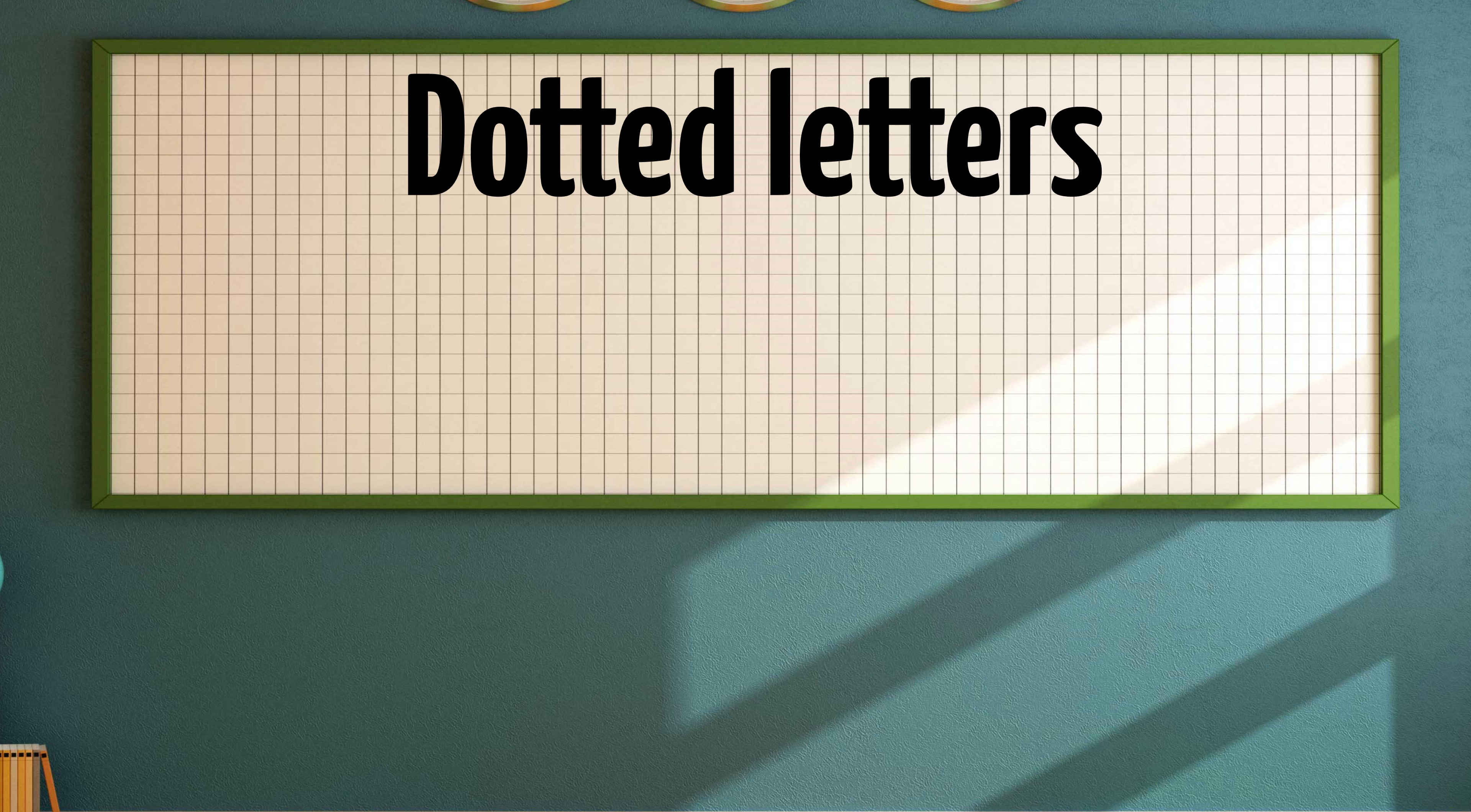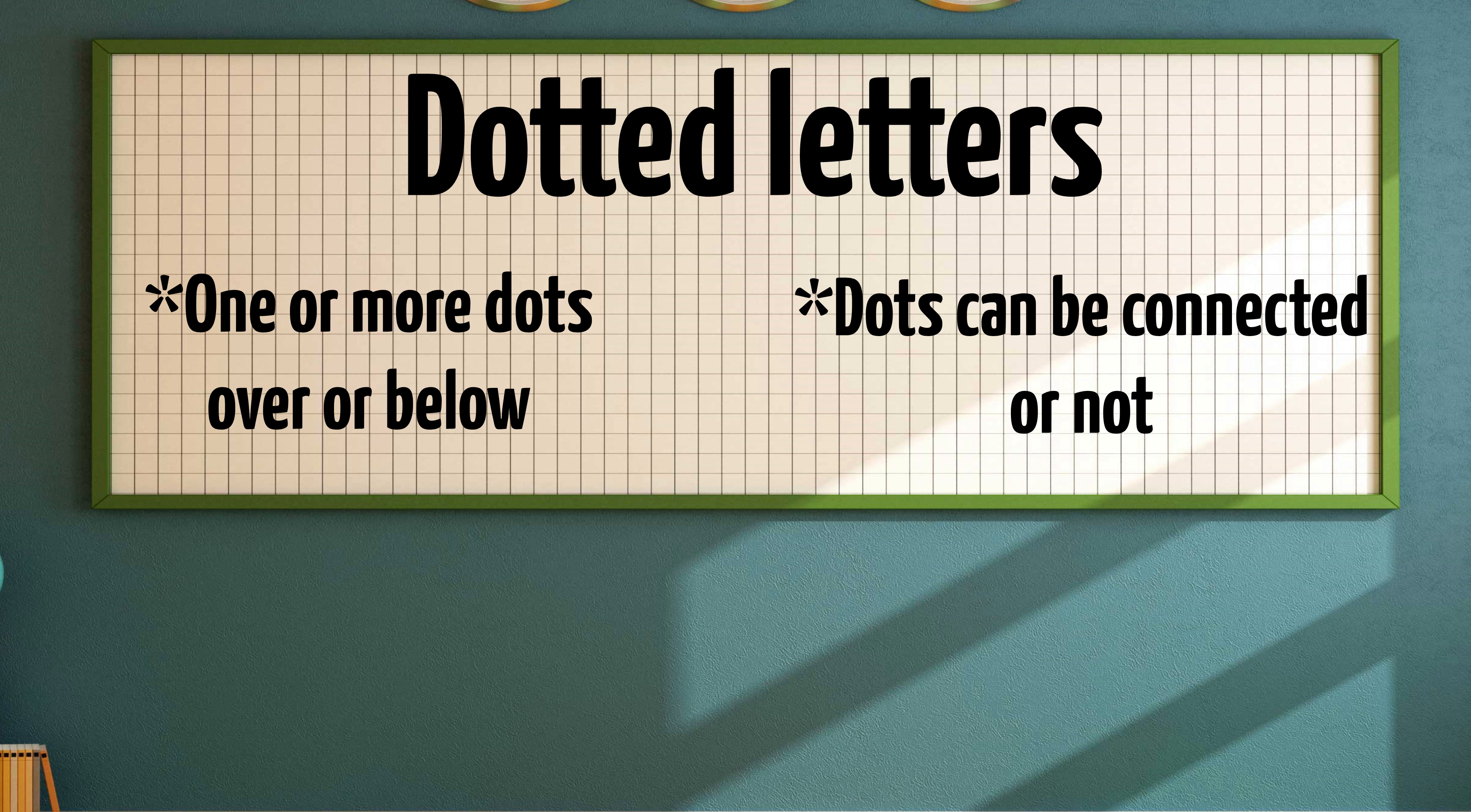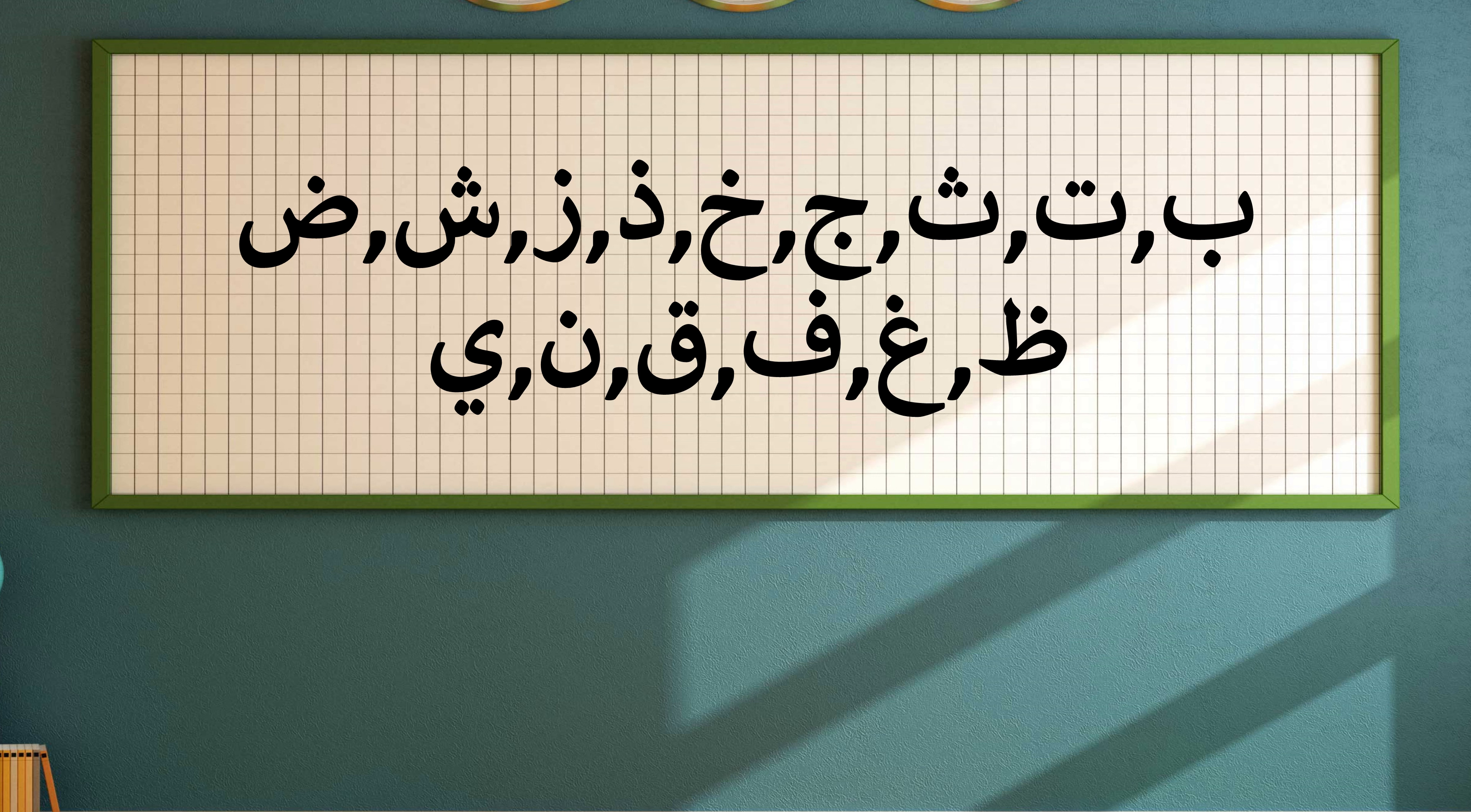So dotted letters means letters that have one or more dots over or below them. And you can either leave the dots separate or connect the dots together. And the dotted letters for Arabic are Ba, Ta, Tha, Jeem, Kha, Thal, Zain, Sheen, Daad, Dhah, Ghayn, Fa, Qaf, Noon, and Ya. All right guys, that was a very quick summary on the whole course.